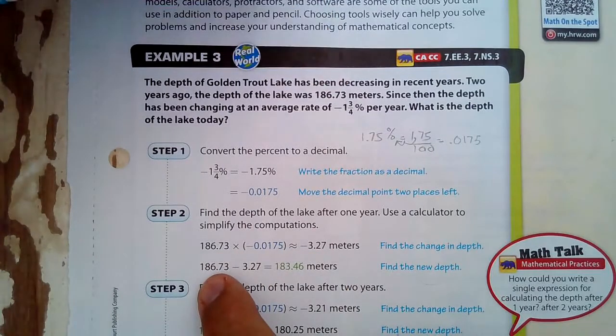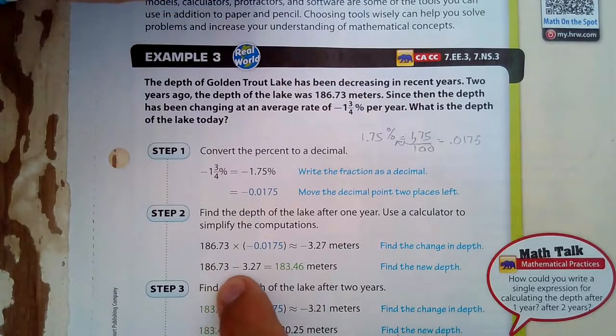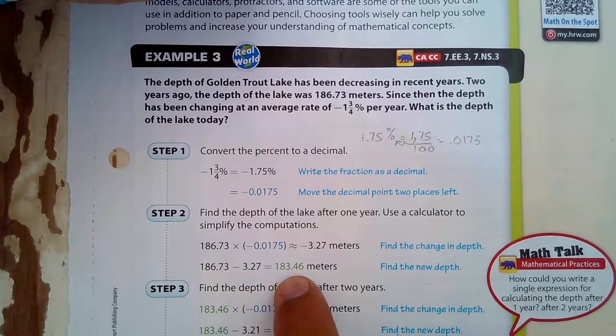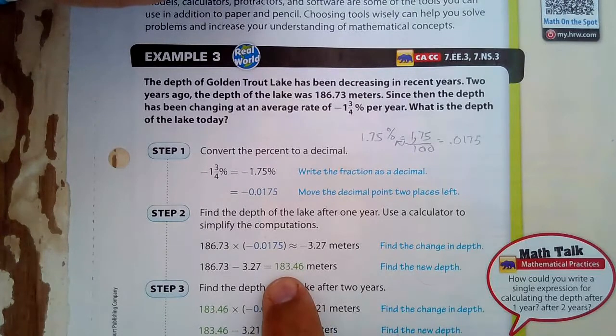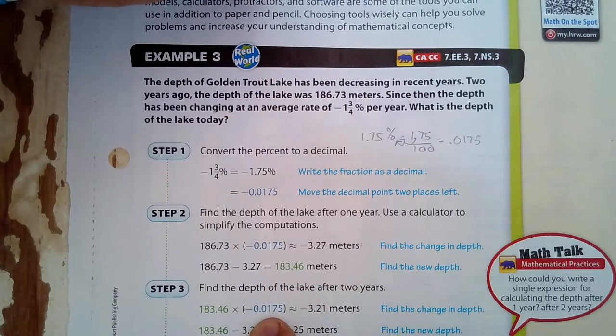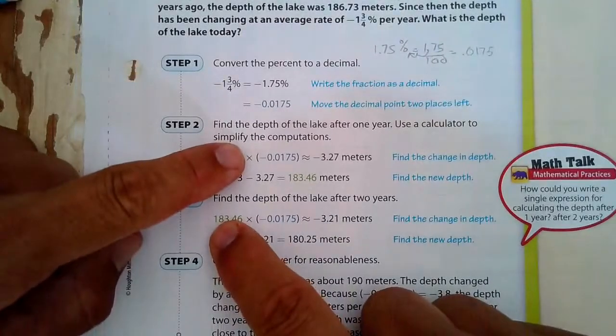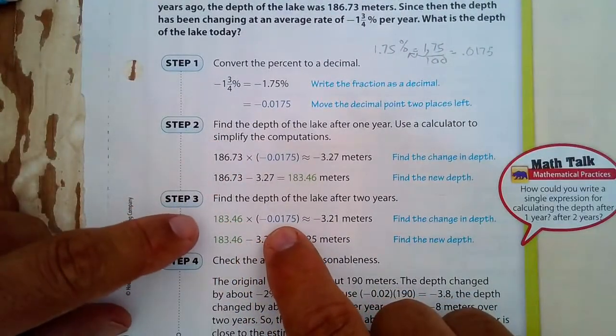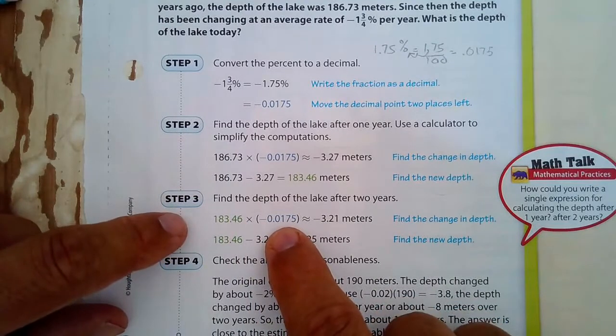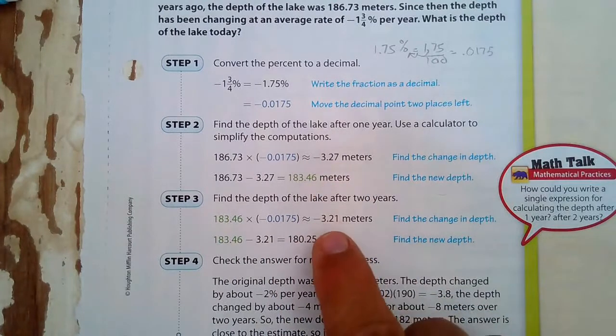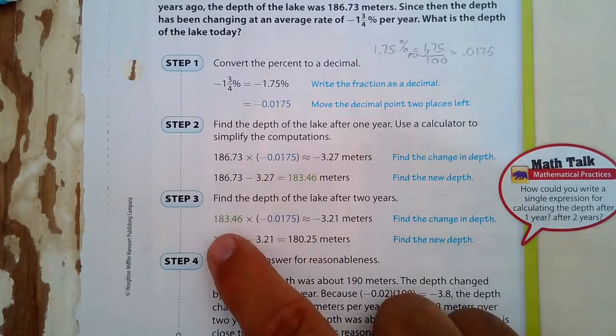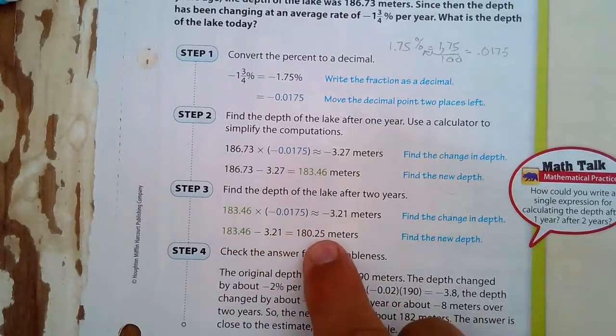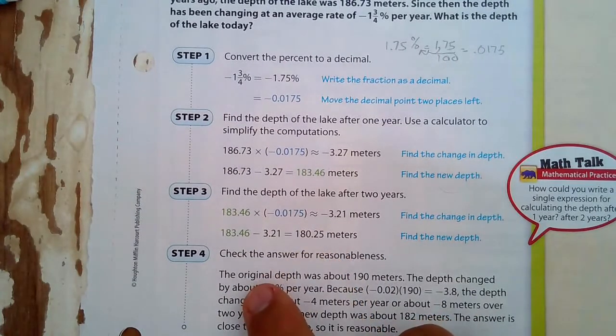So we take that depth and we subtract that. It's no longer this deep, it's now this deep. Now off of that, we have to now take 1.75 percent of that. So we take this amount right here and we multiply by negative 0.0175, which means it decreases by not 3.27 meters, but now 3.21 meters. That's because we're taking a percentage of the new amount, not the old amount. And we subtract that amount here and now it's 180. That is the new depth.